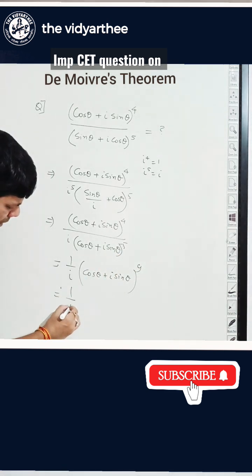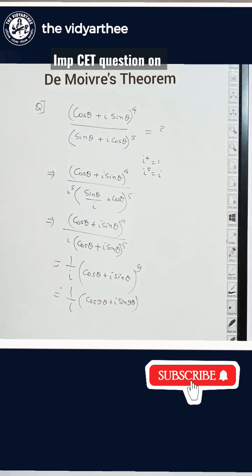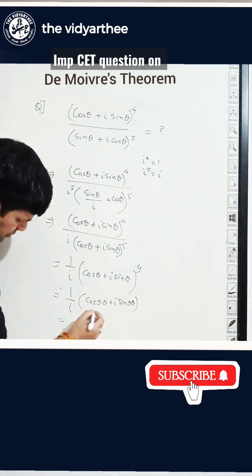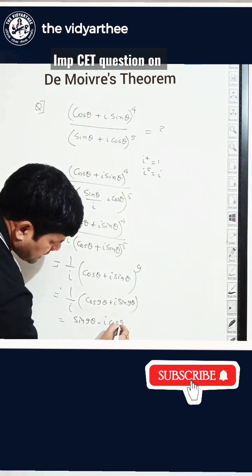Now using De Moivre's theorem, this will become 1 by i. This will become cos 9 theta plus i sine 9 theta. Now taking the i inside, this will become sin 9 theta minus i cos 9 theta.